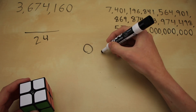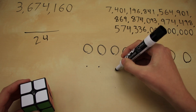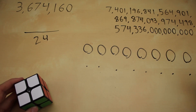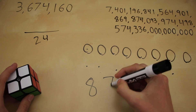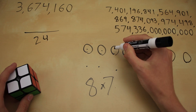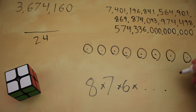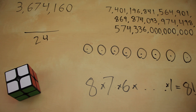Starting with permutations: we have eight different slots to put corner pieces into, and eight different corner pieces to put into those slots. Starting with the first slot, we have eight different choices. Once we choose one, we now have seven different choices for the second one. We continue multiplying these numbers in decreasing order until we have just one slot left and only one more piece to put into it. This big string of numbers can be written as just 8! — eight factorial.